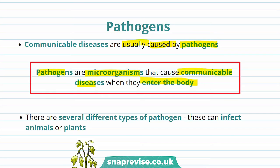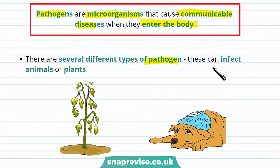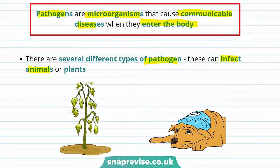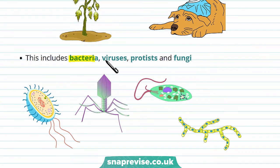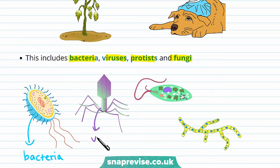There are several different types of pathogens. These can infect animals or plants. The organisms that cause these diseases include bacteria, viruses, protists, and fungi. This is what a bacteria looks like, this is what a virus looks like, this is a protist, and this is a fungi.